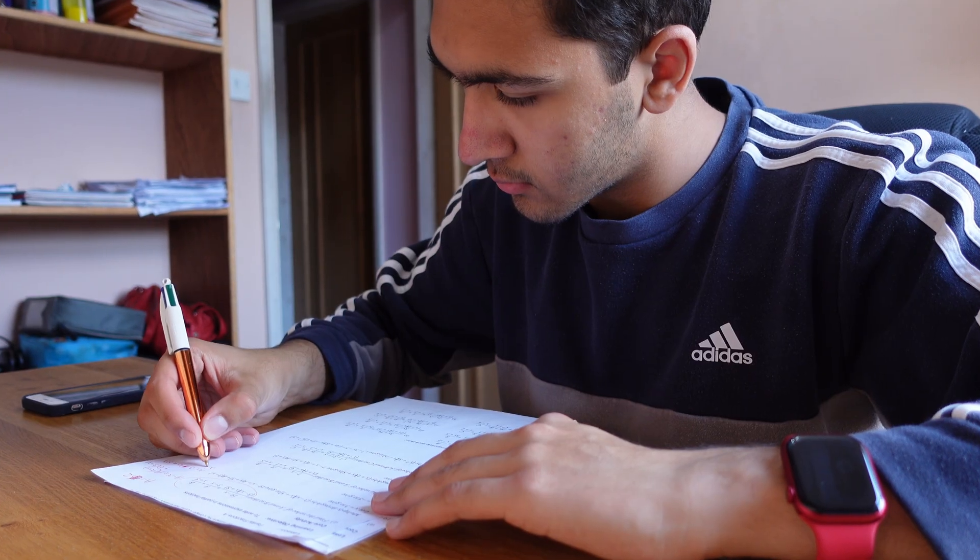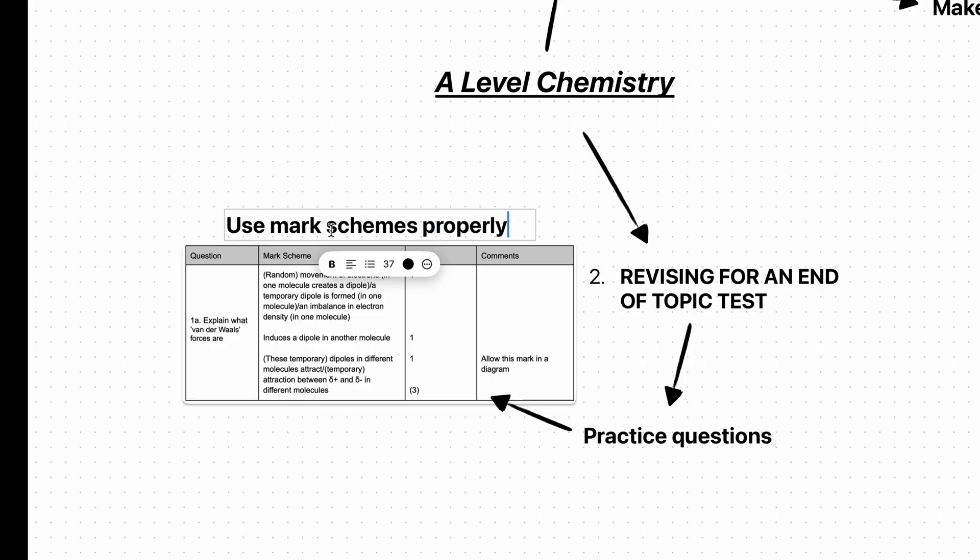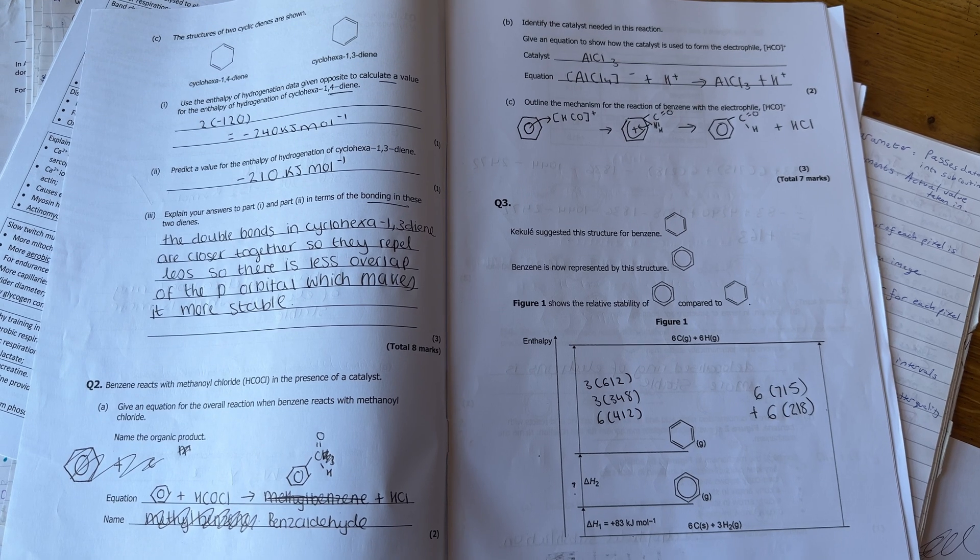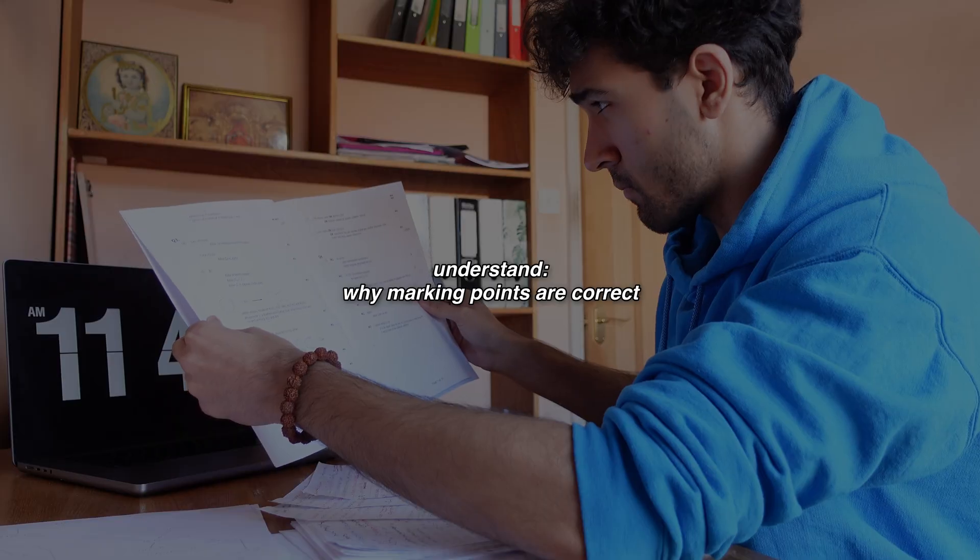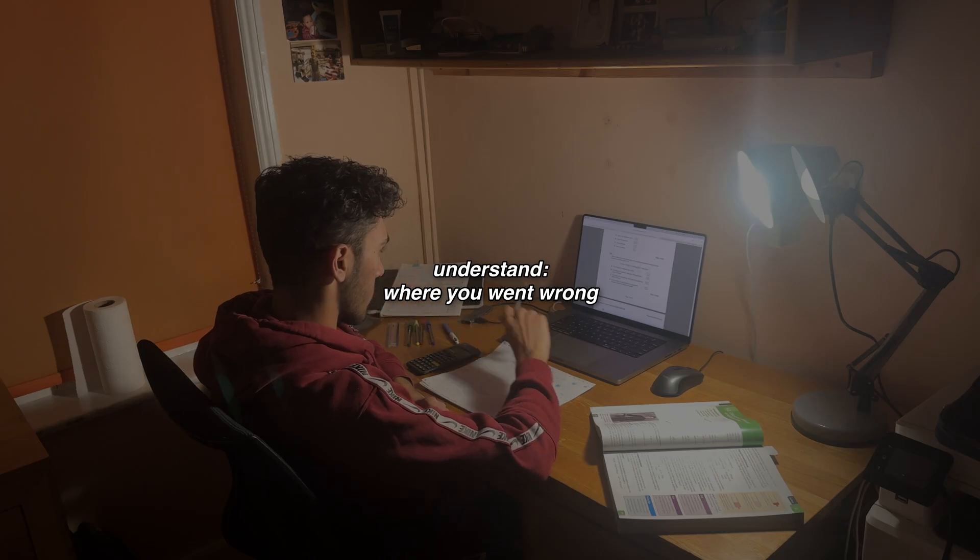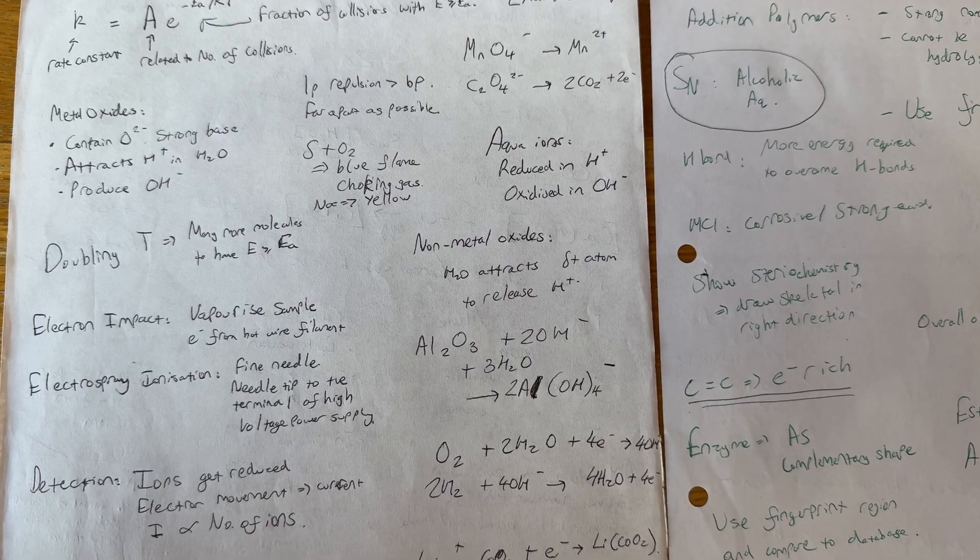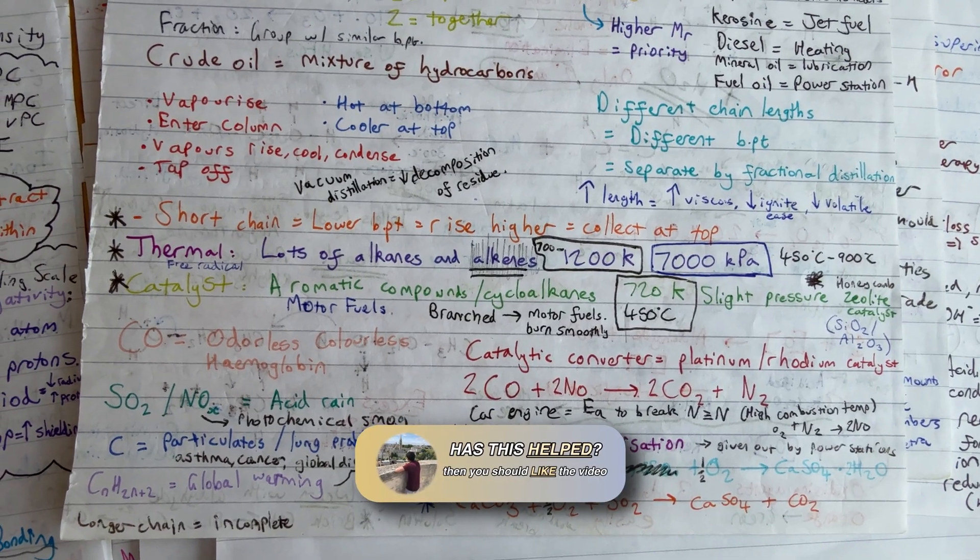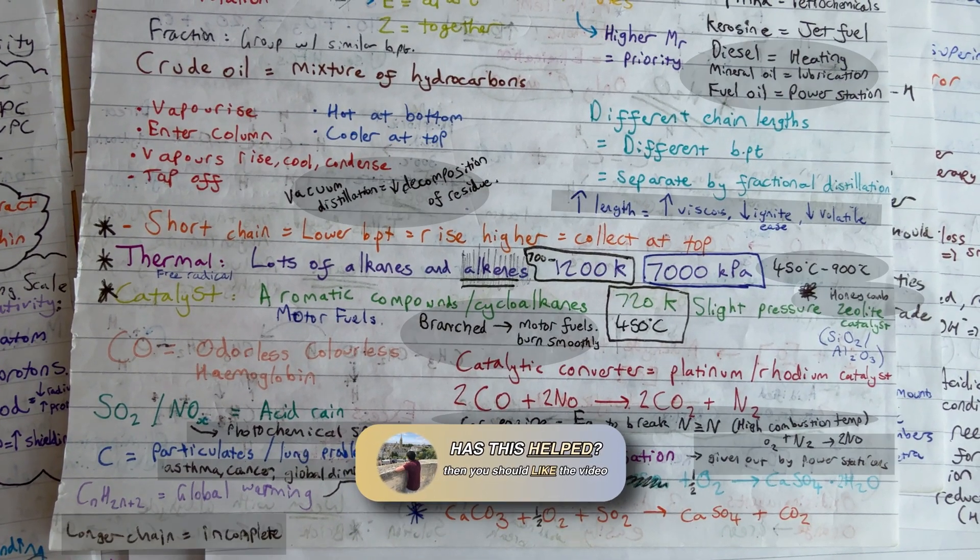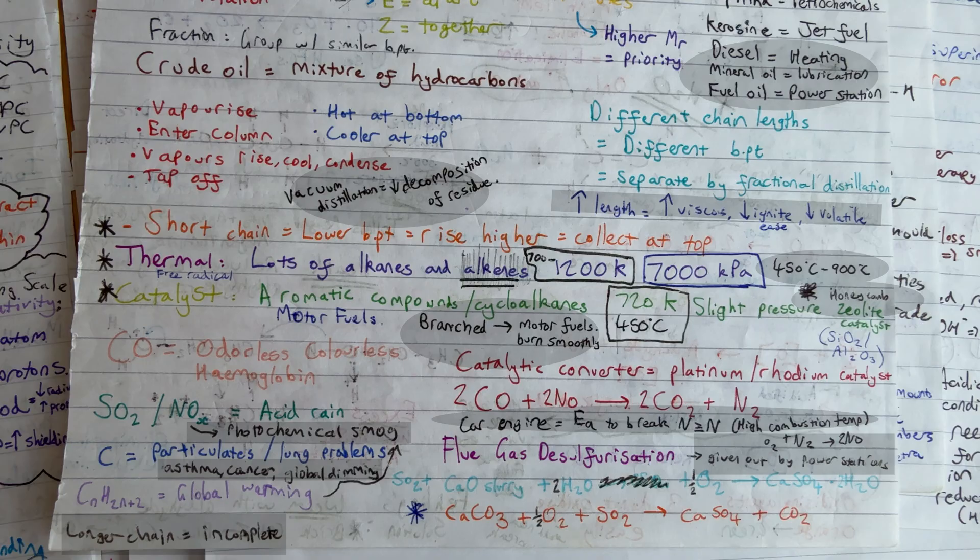One thing you need to do when you use questions is to use the mark schemes as well. Whenever you don't get full marks for a question, you need to make sure that you understand why the marking points are correct, understand where you went wrong, and make notes of the mark scheme. If you see in my notes, which will be in the description, I have black ink all over, and this is adding corrections to my notes.